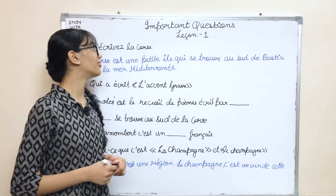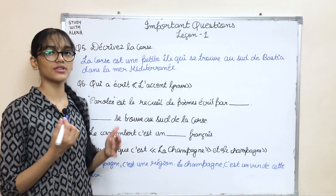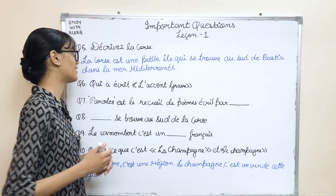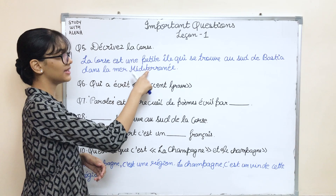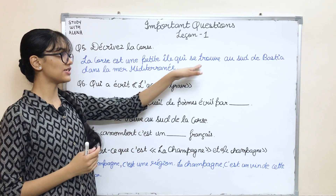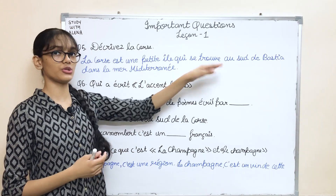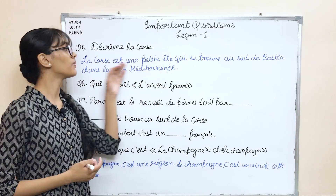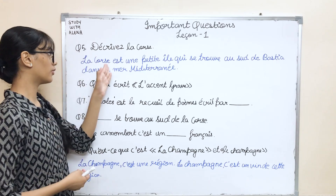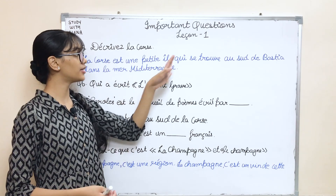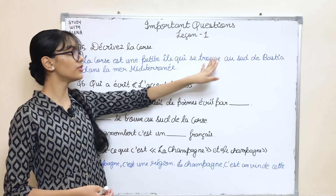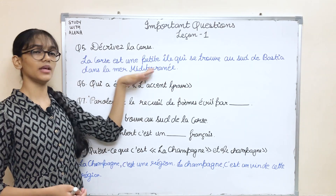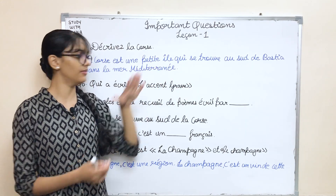The next question is 'Décrivez la Corse' — again a very frequently asked question. La Corse est une petite île qui se trouve au sud de Bastia dans la mer Méditerranée. Corse is a small island found in the southern part of Bastia in the Mediterranean Sea.